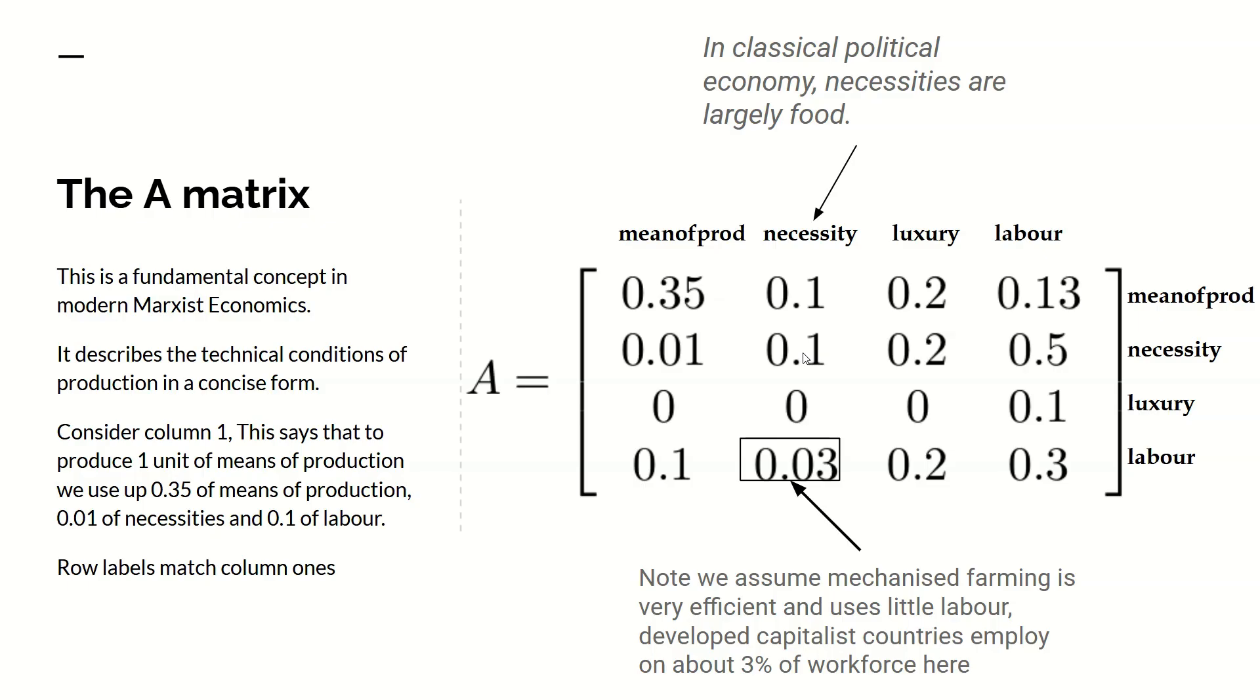I'm saying 0.3% since that's typical for an advanced capitalist country, only 0.3% of the workforce goes there. So basically the rows and columns have the same titles. The rows tell you where the output of a given industry went and the columns tell you how much was needed to produce one unit of output of the other industry.